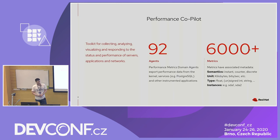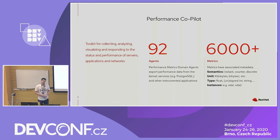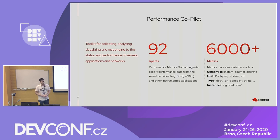We also store the unit — it can be kilobytes, bits per second, whatever. Performance Copilot always stores the data as it gets them, for example as a counter, and when the user wants to read the value, it automatically rate-converts it. We also support multiple types: float, 32-bit, 64-bit, unsigned integers, and strings. We also have the concept of instances — for example, if you want to know how many bytes are written to a disk, usually you have multiple disks, so each disk is one instance.